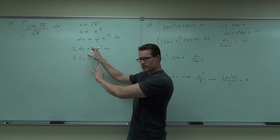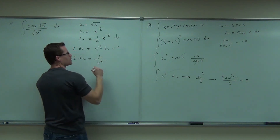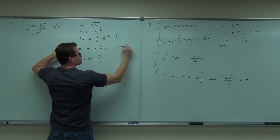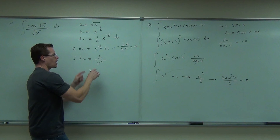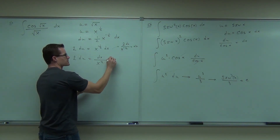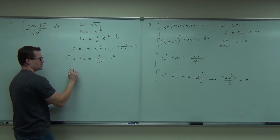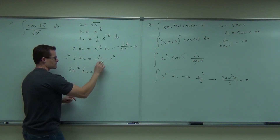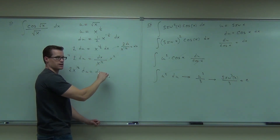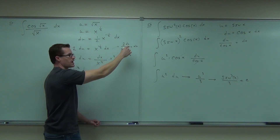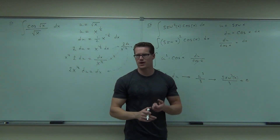You could divide option one, or option two: look at the board — if you divide now, you get 2 du over x to the negative one half equals dx. Or, multiplying x to the one half on both sides gives 2 x to the one half du equals dx. Moving the negative exponent up to the numerator makes it 2 x to the positive one half du equals dx. Either way is fine — no way is better than the other.